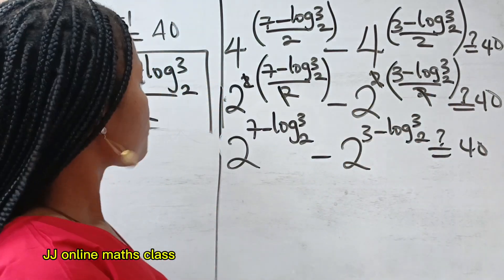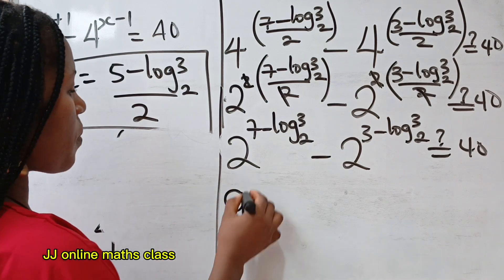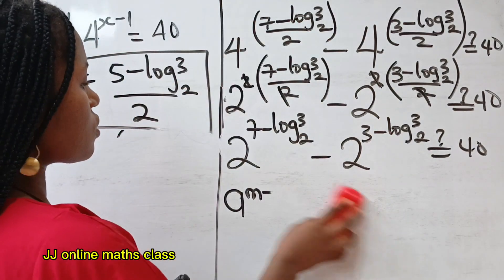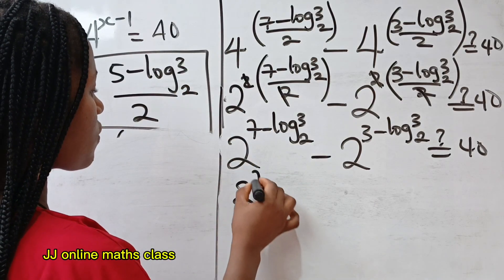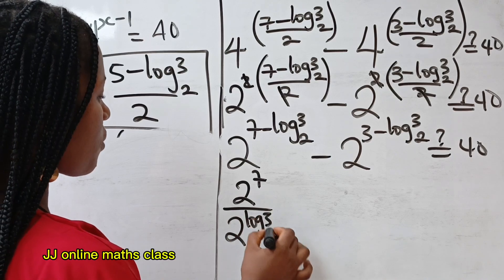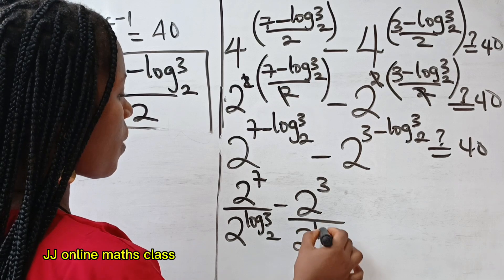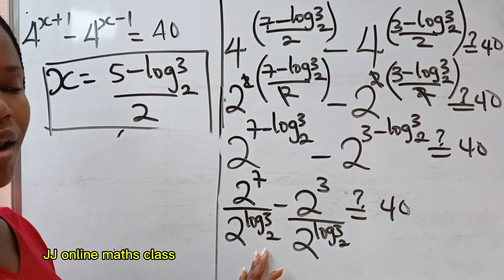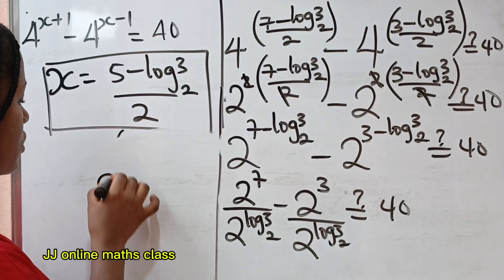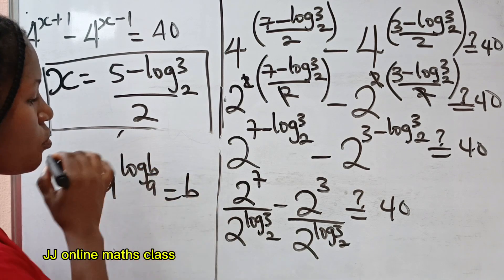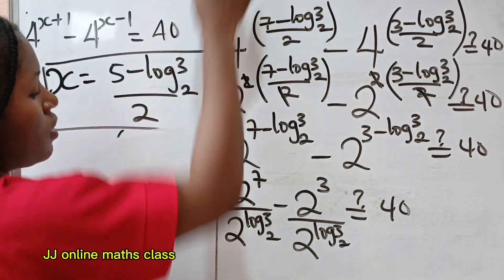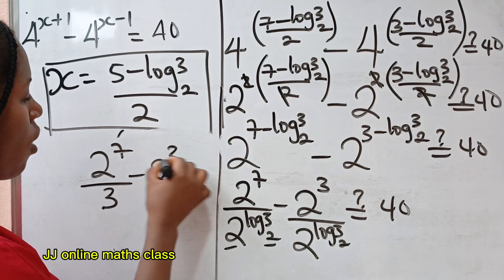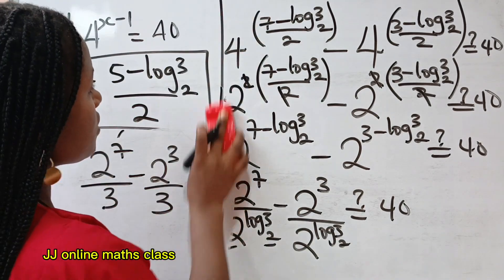Now, a^(m minus n) equals a^m divided by a^n. So we can write this as 2^7 divided by 2^(log 3 base 2), minus 2^3 divided by 2^(log 3 base 2). Remember the law: a to the power of log b base a equals b — they share the same base. So 2^(log 3 base 2) equals 3. We have 2^7 divided by 3 minus 2^3 divided by 3.